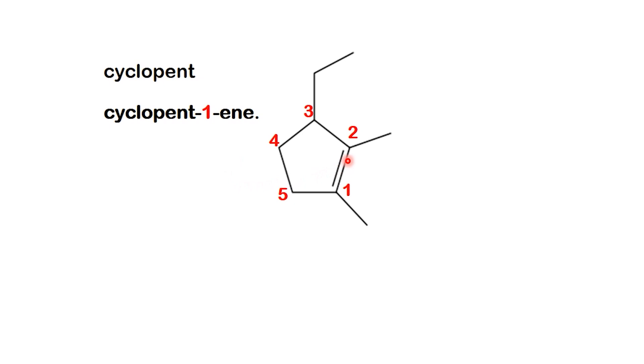However, there's an important convention. When a ring contains only one double bond, its position is automatically assumed to be between carbons 1 and 2. For this reason, we usually omit the number and simply write cyclopentene.